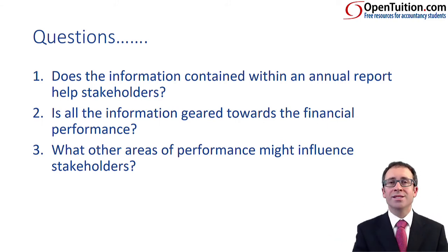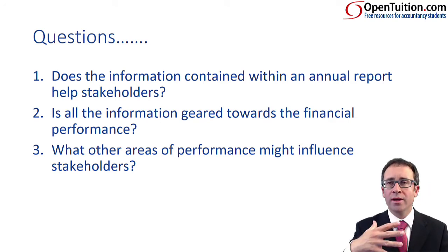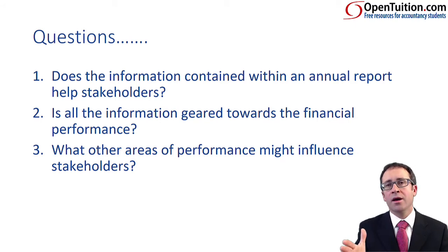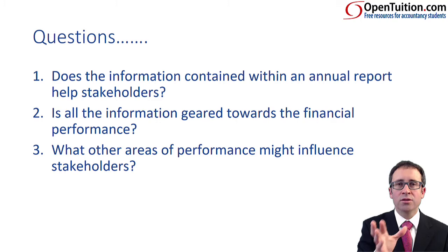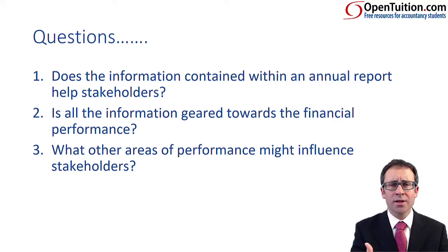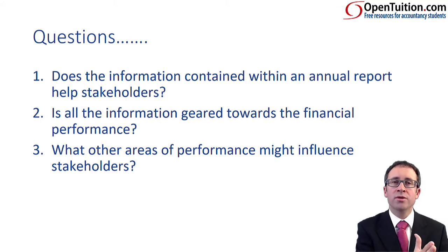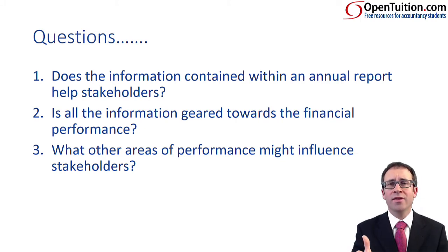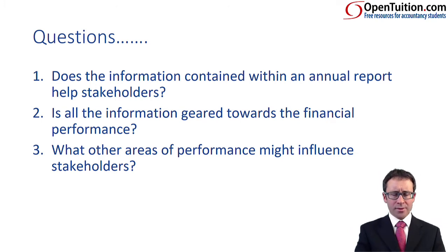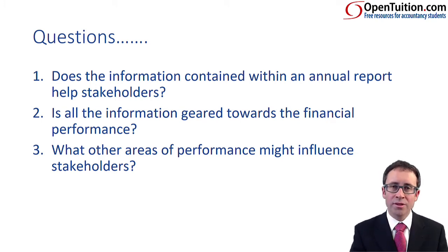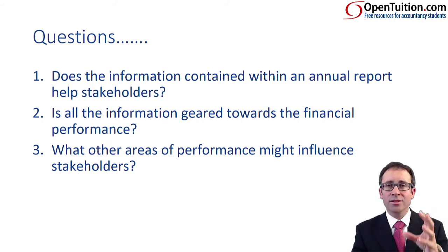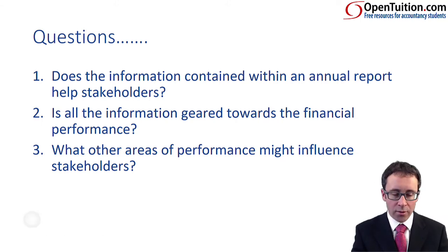Look at technology right now — we're thinking about removing diesel cars from the streets of Paris and London, moving towards cars powered by batteries. Elon Musk and his Tesla business with electric cars — that's where the motor industry is moving. But what are Ford, Chrysler, and Nissan doing about it? What are they thinking about in terms of sustainability? At the moment everything is geared around performance. So what other areas might influence stakeholders? These days, sustainability is a really big aspect in today's world, and that's where the annual report is limited.